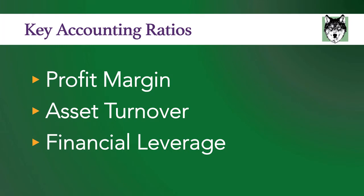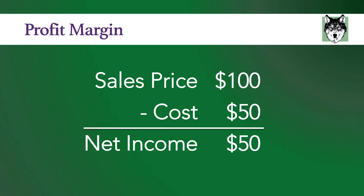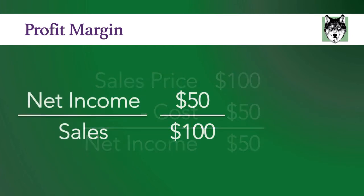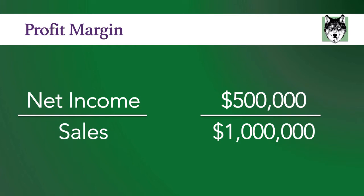I'm going to talk through three key accounting ratios you should know. The three ratios are profit margin, asset turnover, and financial leverage. Profit margin is net income divided by sales. This is your measure of profitability — how much profit you are making off every sale. Let's imagine you are selling shirts. If you sell a shirt for $100 and it costs you $50 to make, your net income is $50. So net income divided by sales is 50 divided by 100, which equals 50%, or 50 cents on the dollar. So $1 million in sales would generate $500,000 in profit.